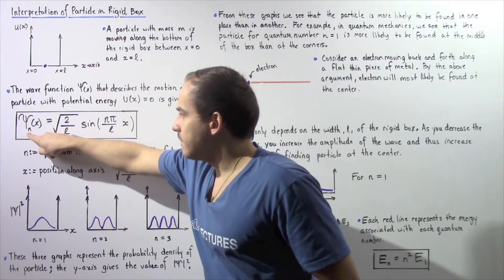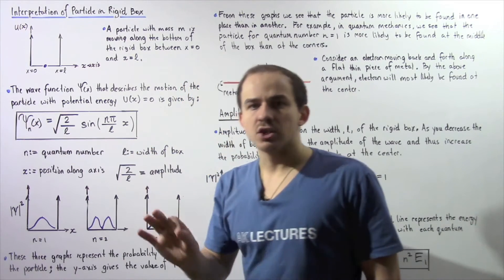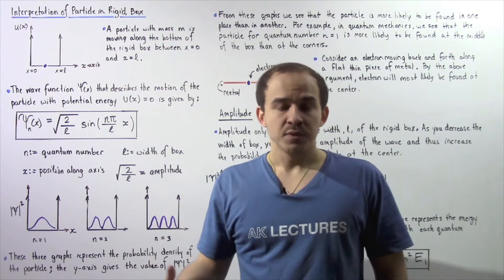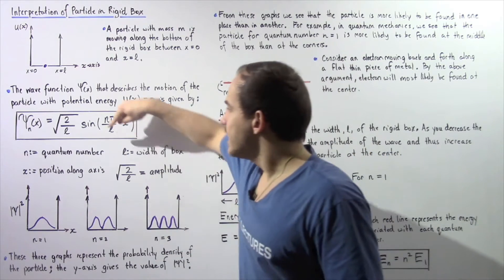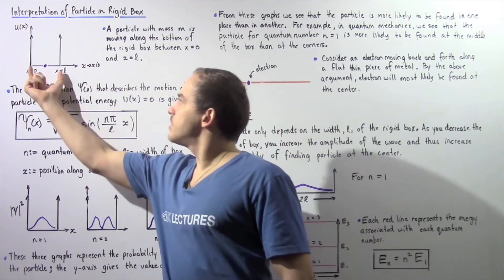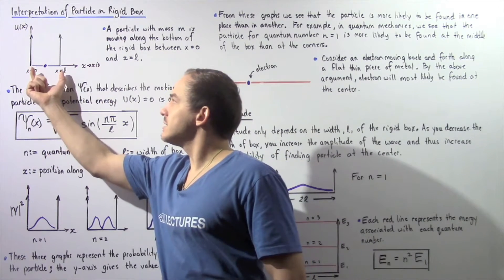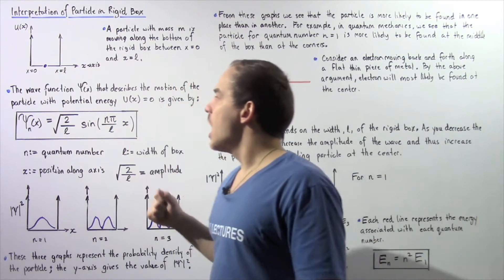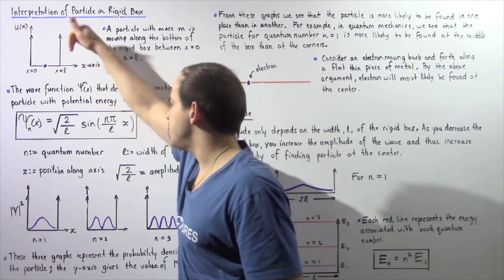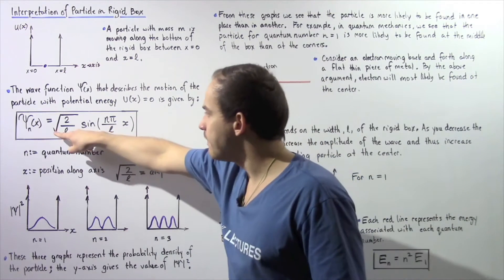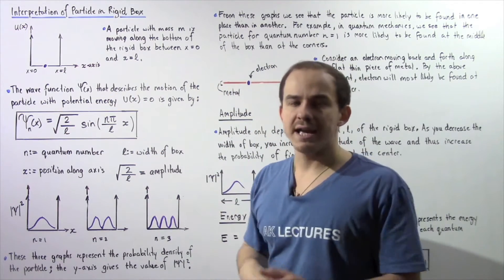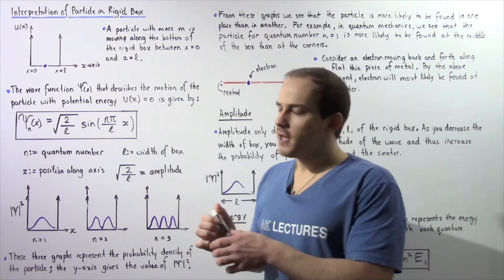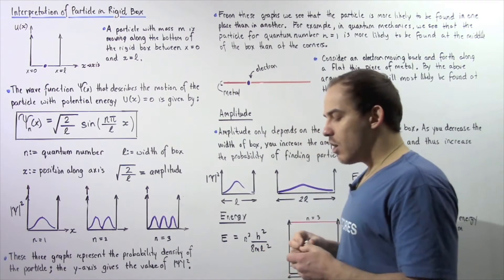The quantum number n is a positive integer — it can be one, two, three, four, and so on. L represents the width of the box, the distance between the two corners. x represents the position of our particle between these two points. And the square root of 2 divided by L represents the amplitude of the wave produced by this particle.